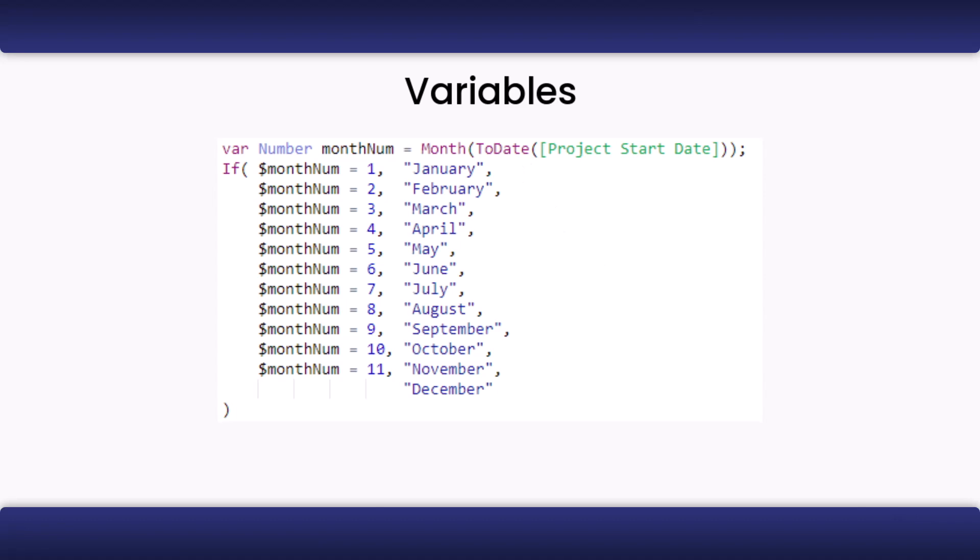To declare a variable, you need to type in var, preceded by the data type, and then the name of the variable. Some variable names are not allowed because they are the same name as a data type or a function. For example, you cannot name a variable month because month is the name of a function. You will then type equals and write out what your variable should be equal to. You will then end the variable with a semicolon. To use the variable in your formula, you will type a dollar symbol, then the variable's name.